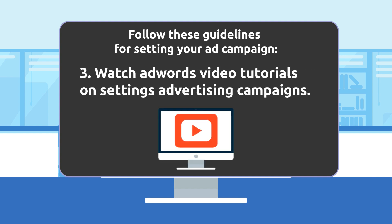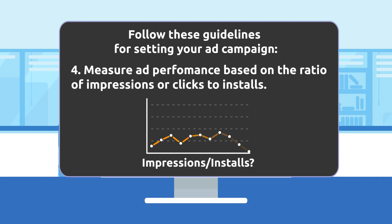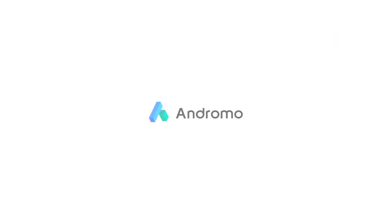Watch AdWords video tutorials on setting advertising campaigns. Measure ad performance based on the ratio of impressions or clicks to installs. This will help you determine the cost of user acquisition through advertising and assess this promotion method's financial effectiveness.